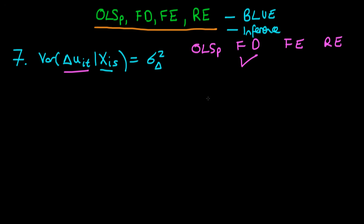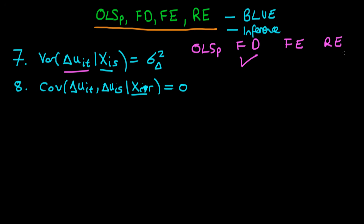It is a requirement for the first differences estimator to be BLUE. The next assumption we require is that the covariance of the first difference of the idiosyncratic error with the first difference of the idiosyncratic error in some other time period, given our vector of independent variables at any time period R, has to be equal to zero. This is a requirement for the first differences estimator to be BLUE.